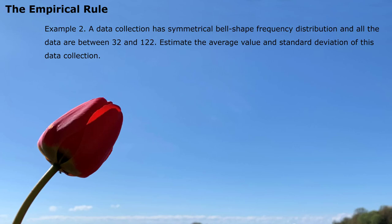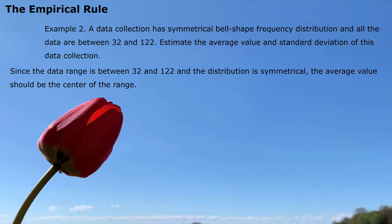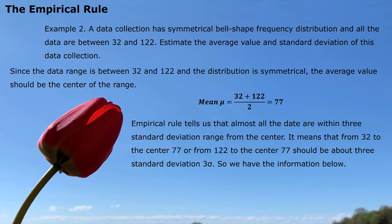Here is another example. A data collection has a symmetrical bell-shaped frequency distribution, and all the data are between 32 and 122. We need to estimate the average value and the standard deviation. Since the distribution is symmetrical, the average value is the center of this range. We calculate the average from the lower and upper limits and get 77 as the estimated mean. The distance from the center to both ends should be equal, giving a distance of 45, since 122 minus 77 and 77 minus 32 both equal 45.